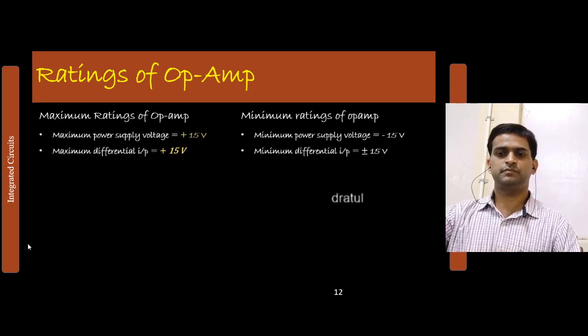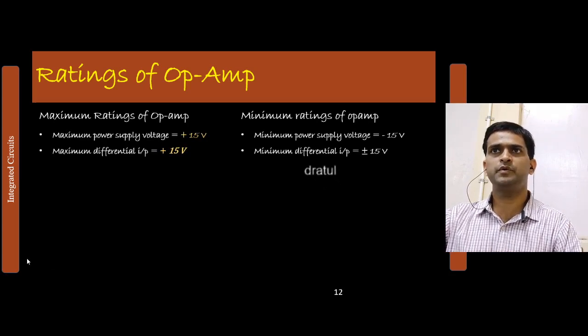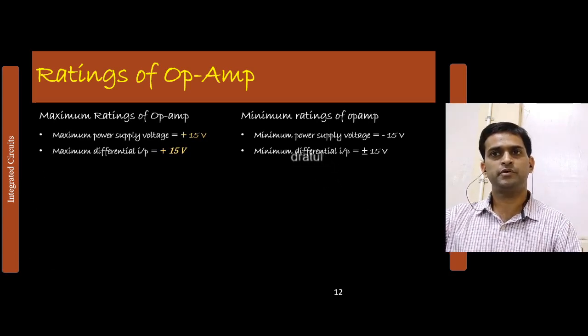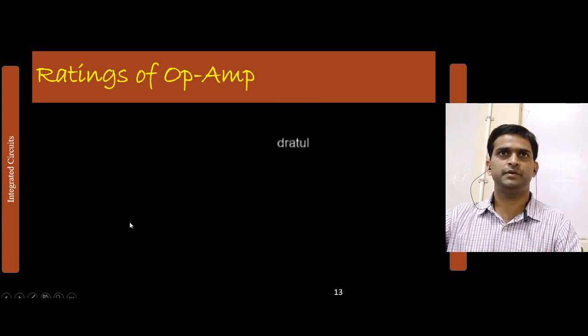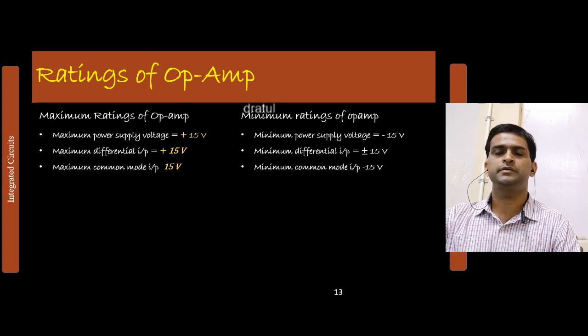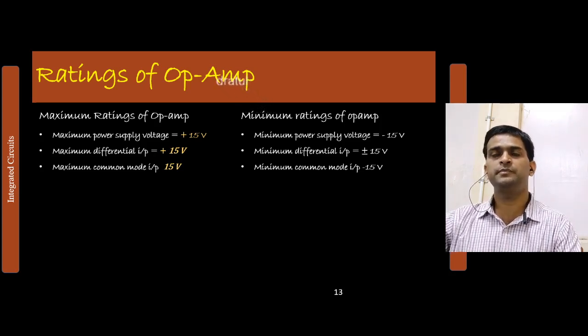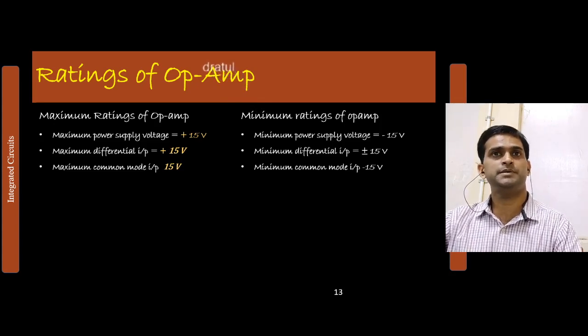The maximum common mode input voltage is 15 volt, and the minimum common mode input voltage is minus 15 volt. Maximum output of operational amplifier is limited to the power supply. So, minimum output of the op-amp is also limited by the power supply.